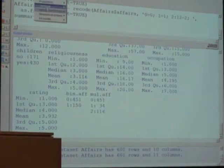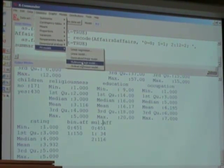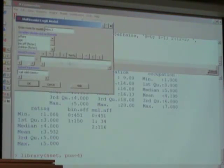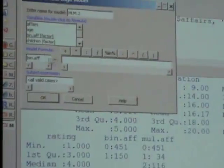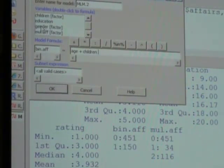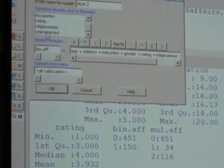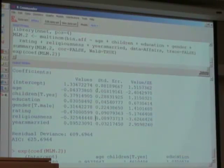Let's run a binomial logit. I click on statistics, fit models, and I just select multinomial logit model because I can fit binary logit and multinomial logit using this. I say bin affairs as a factor variable, my explanatory variables: age, children, education, gender, rating, religiousness, and years married. And here's my model.